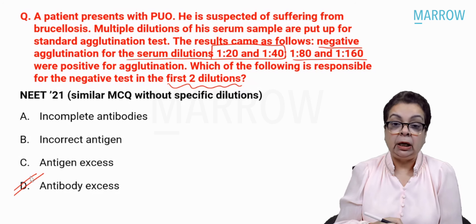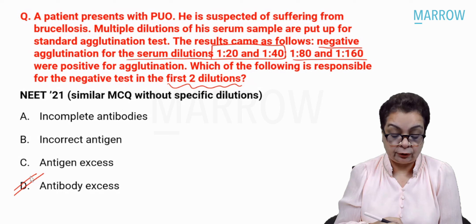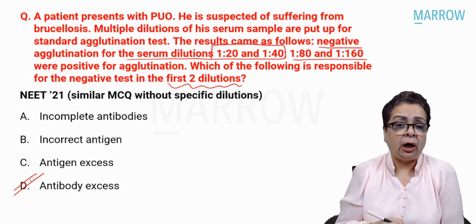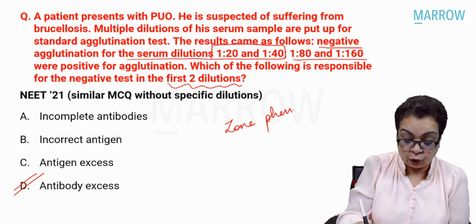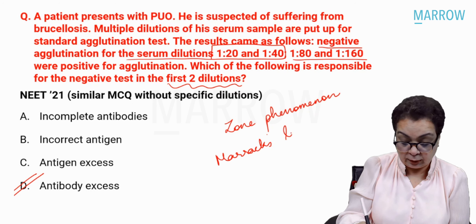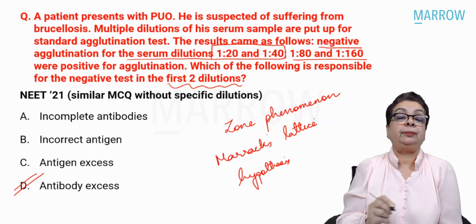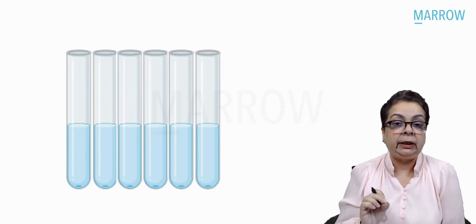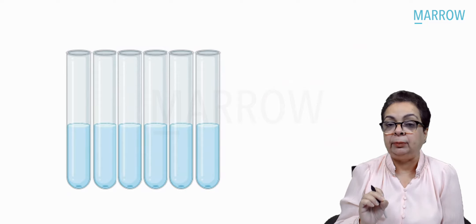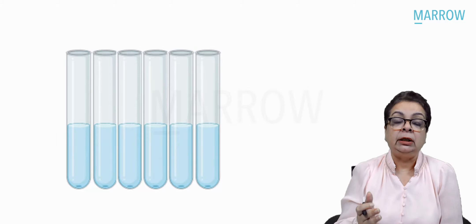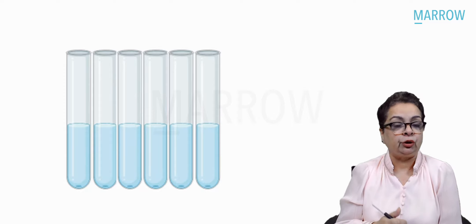The answer to this question is antibody excess. This is answered by our knowledge of the zone phenomenon, also called the Marek's lattice hypothesis. What it says is that in precipitation and agglutination tests, the maximum amount of precipitate or agglutinate is seen only when antigens and antibodies are present in equivalent proportions. If either is in excess, there will be minimal or no precipitation or agglutination.